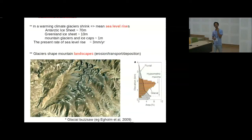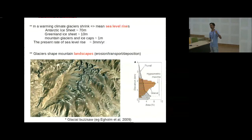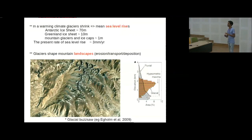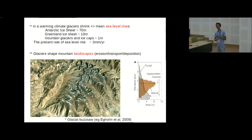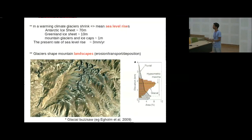Another important point is that if glaciers shrink, that water goes into the ocean and raises ocean levels. If the Antarctic ice sheet melts, it would lead to some 70 meters of sea level rise. Glaciers as such contribute only about one meter. Compared to ice sheets, glaciers are fast objects — they respond on decadal scales where ice sheets take hundreds of years. Right now there is three millimeters per year of sea level rise. Although glaciers are maybe one percent of total ice volume, they contribute one-third of that rise.